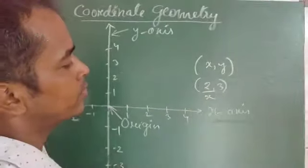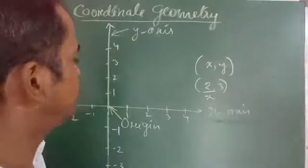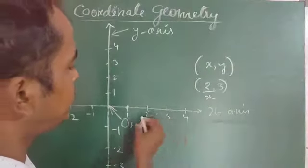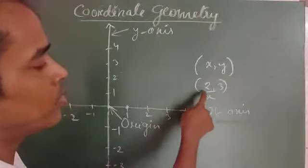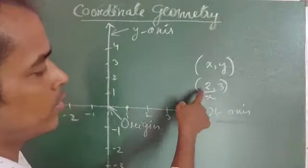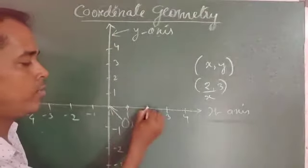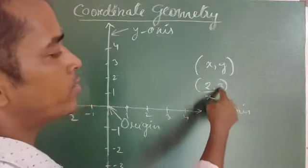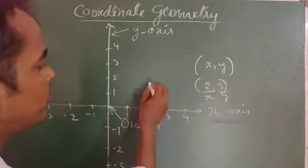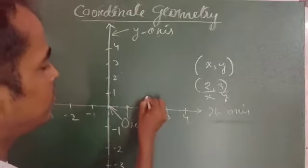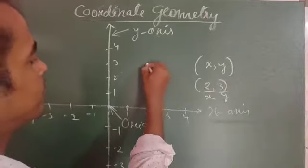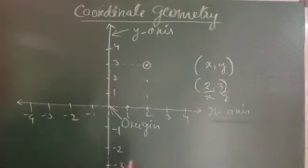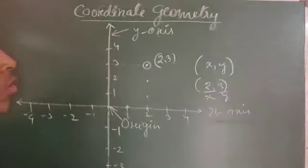First, the x-coordinate is 2, so you go two steps on the x-axis towards the right side, because the right part is positive — 1 and 2. Next, for y it is 3, so we go upward by 3 steps: 1, 2, 3. This is the location of the point (2, 3).